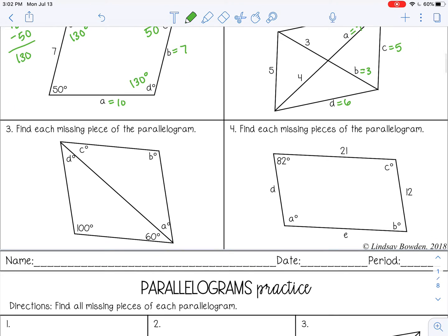All right, look at number three: find each missing piece of the parallelogram. Okay, so we know opposite angles are congruent. So 100 degrees and B will be the same, which means B is 100 degrees.